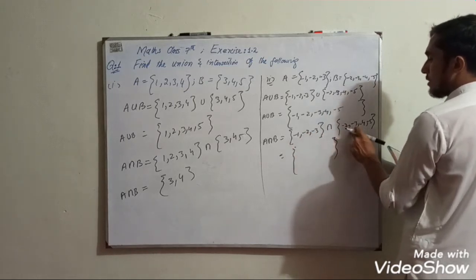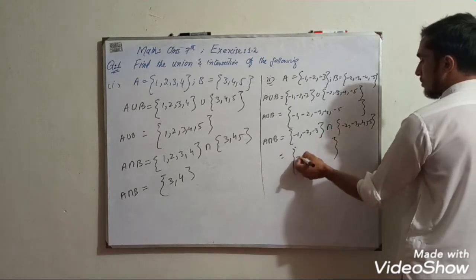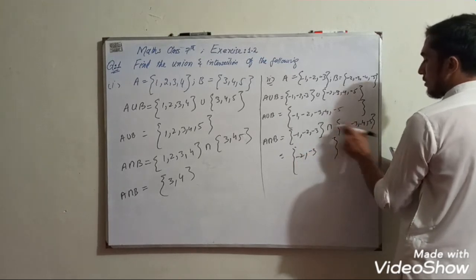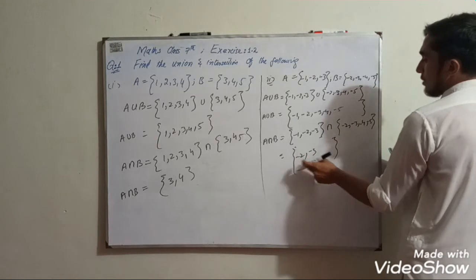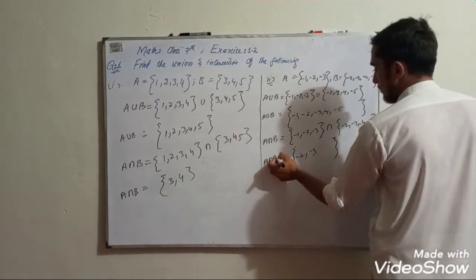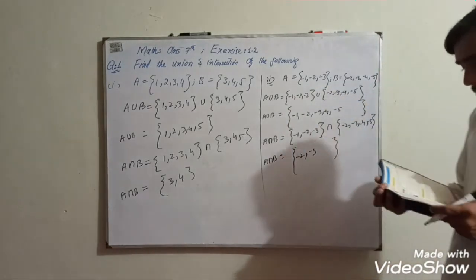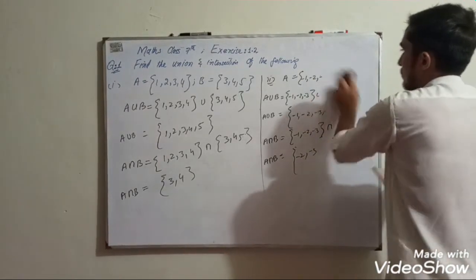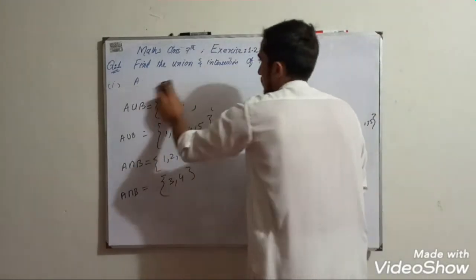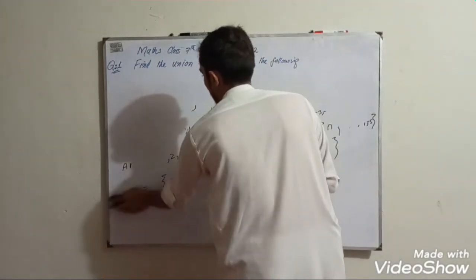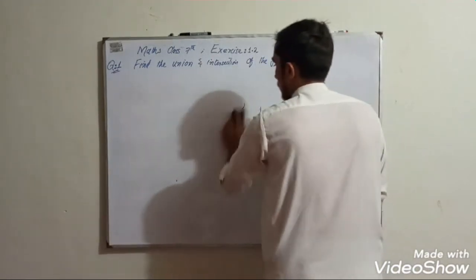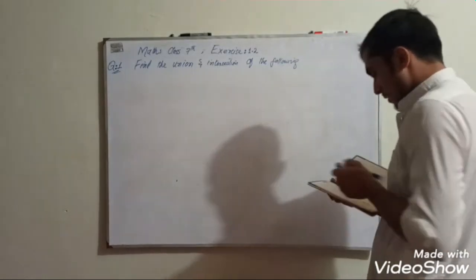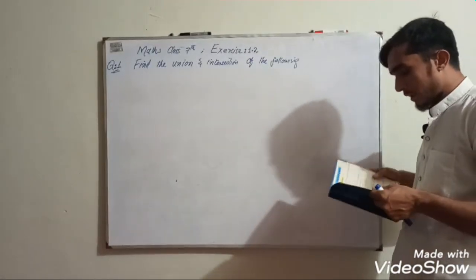Now A intersection B: the common elements are {-2, -3, -4, -5}. A minus B gives us {-4, -5}.